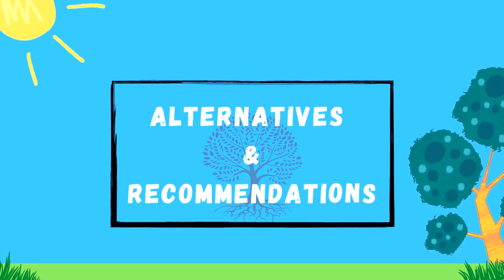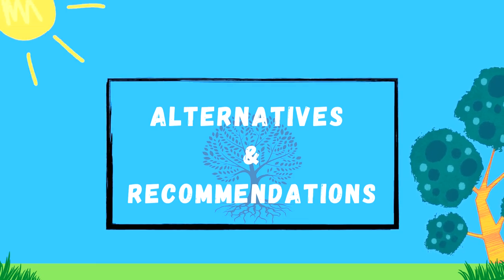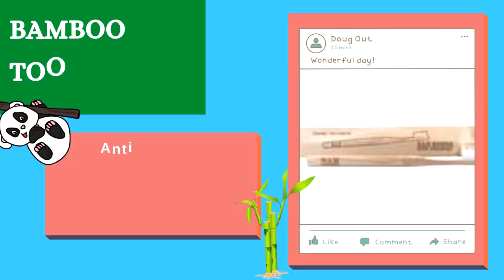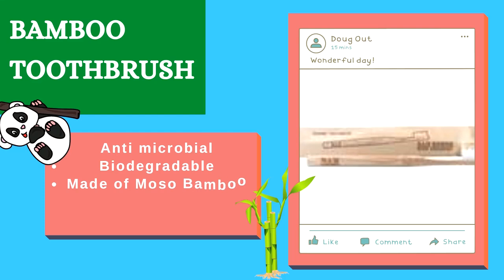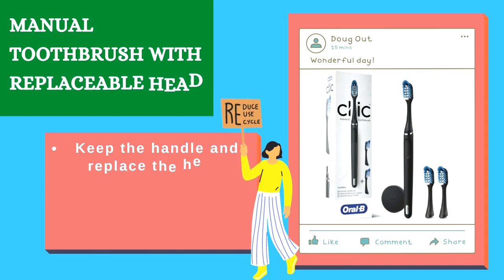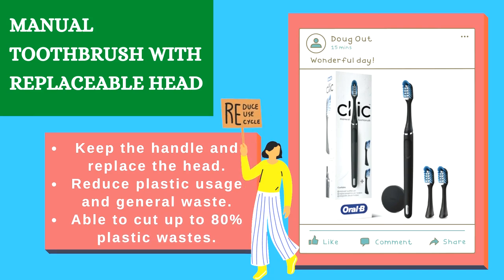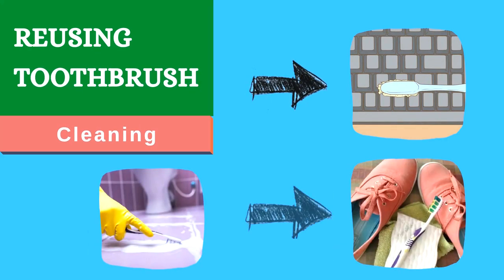Therefore we need to prevent toothbrushes from polluting the earth. One alternative is using a bamboo toothbrush — bamboo toothbrushes are antimicrobial and biodegradable, made from moso bamboo, so we don't disturb pandas since they don't eat moso bamboo. Another option is a manual toothbrush with a replaceable head, allowing you to keep the handle and only replace the upper part, reducing plastic usage by up to 80 percent and reducing general waste significantly.